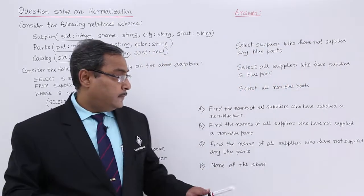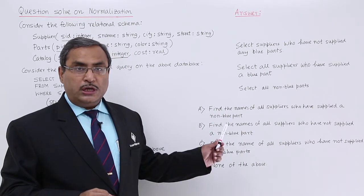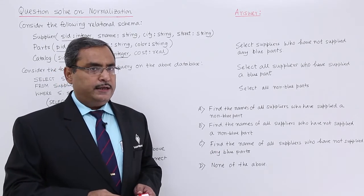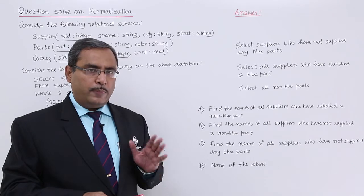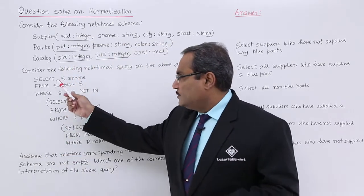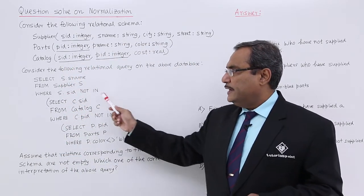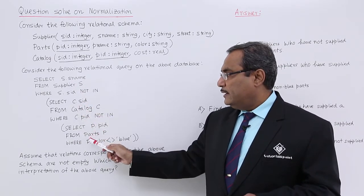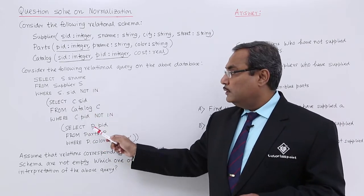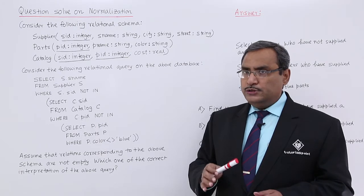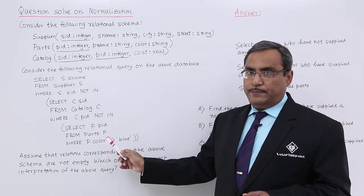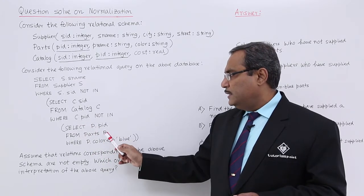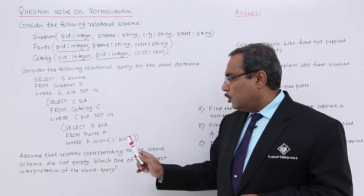We have four options and we need to tell which one is suitable for the given SQL statement. Let us go one by one. This is the outer query, this is the inner query, and this is the innermost query. We always start with the innermost query because it does not depend on anyone: SELECT P.PID FROM Parts P WHERE P.color != 'blue'.